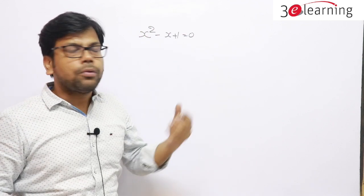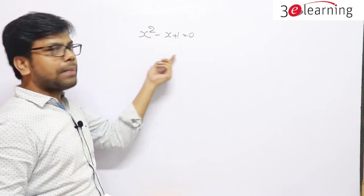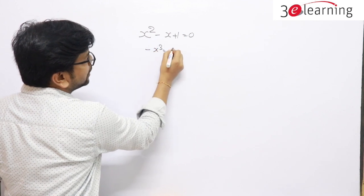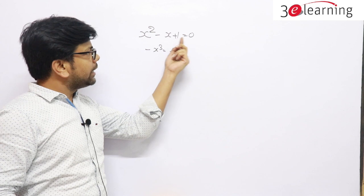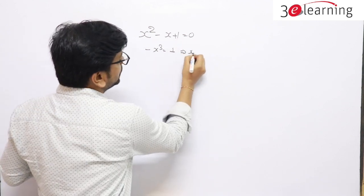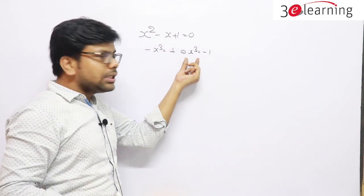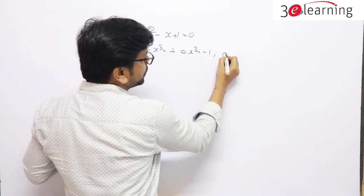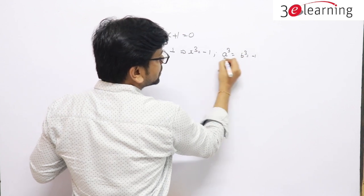This equation is a form of a GP series: 1, -x, x². The next term in the GP series is -x³, which equals 1. So when you have this GP series summing to 0, we can say x³ = -1. And since a higher power equals a constant, the roots A and B of this equation will also have their cube equal to -1.